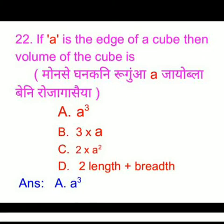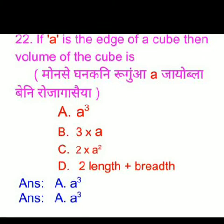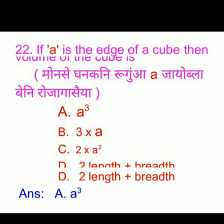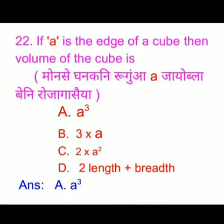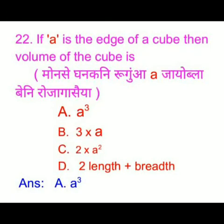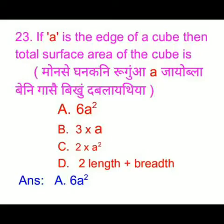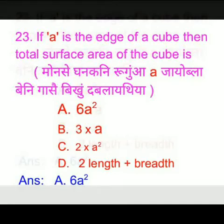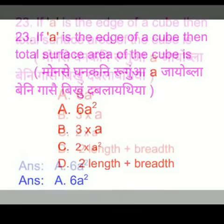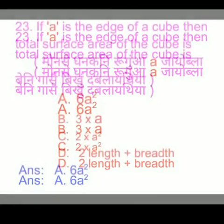If A is the edge of a cube, then the volume of the cube — we have four options and the right answer is option A: a cube. If A is the edge of a cube, then the total surface area of the cube — we have four options and